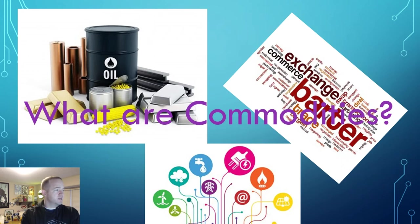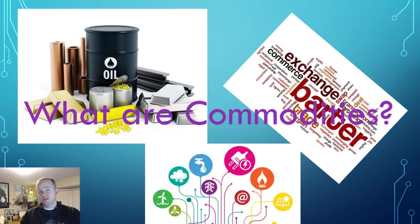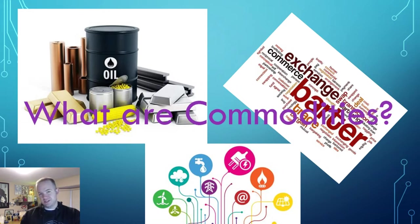So let's start by going over what commodities are. According to Investopedia, a commodity is a basic good used in commerce that is interchangeable with other commodities of the same type. Common commodities include gold, beef, oil, lumber, and natural gas. So basically, raw materials are available for trade.